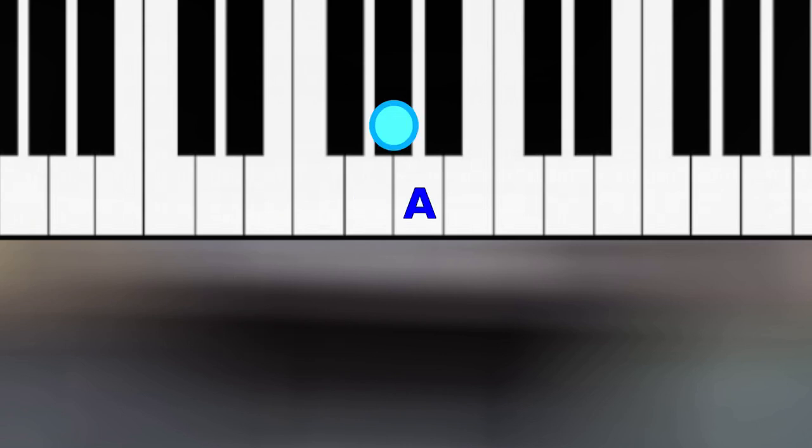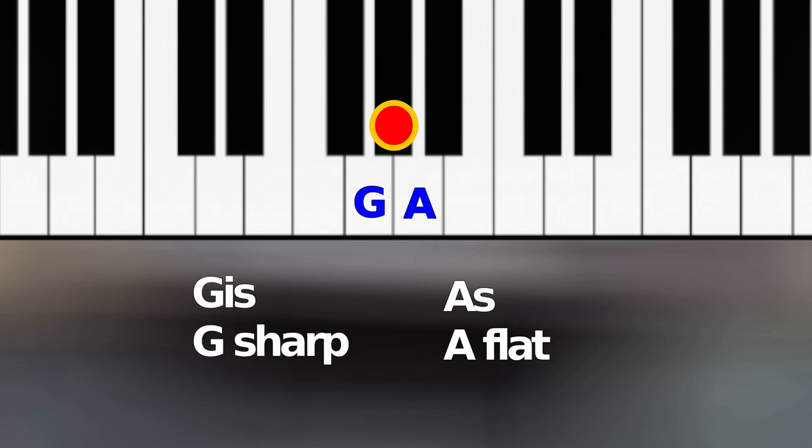And if the white A above is lowered by a semitone to the black key, the same key is then called ASS in German. The E of the S is simply omitted here because of the vowel. And in English the black key is called A-flat. This means that the key theoretically has two different pitches and two different names.